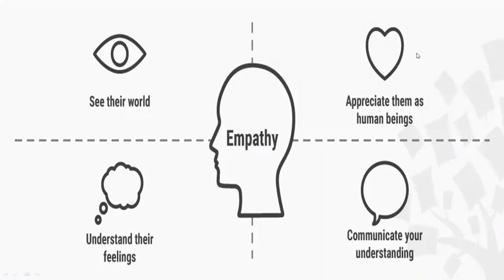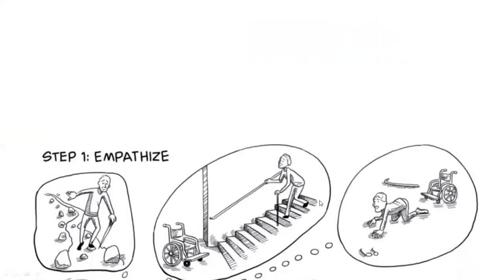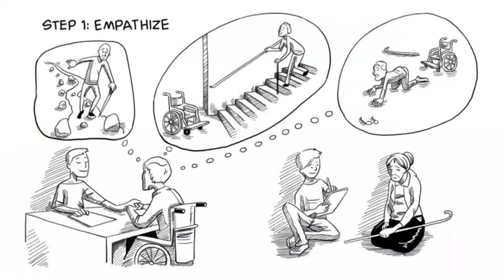We see the world, then appreciate users as human beings, understand their feelings and communicate our understanding. The first aspect is user research. This process begins with conducting extensive user research — interviews, surveys, observations and other methods to gather information about the target users. The goal is to understand their behavior, motivations, emotions and preferences related to the problem you are trying to solve.